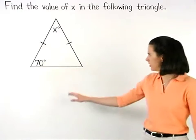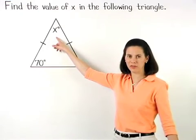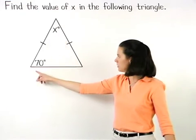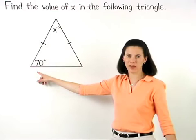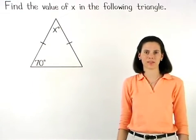So let's say we're given an isosceles triangle with a vertex angle that measures x degrees and a base angle that measures 70 degrees, and we're asked to find the value of x.